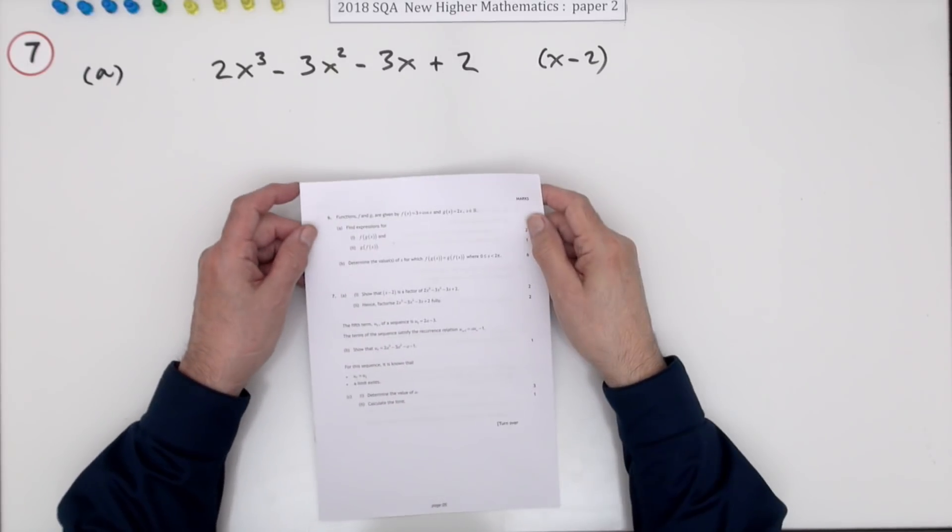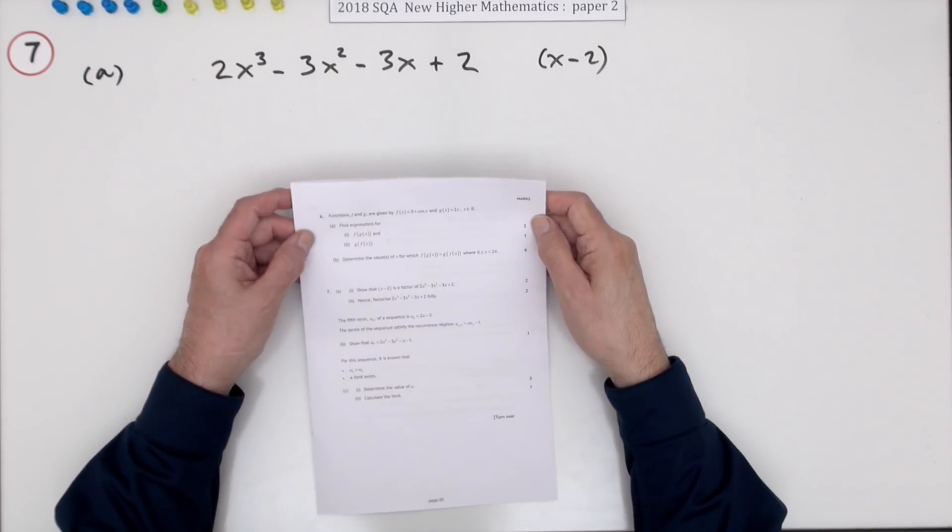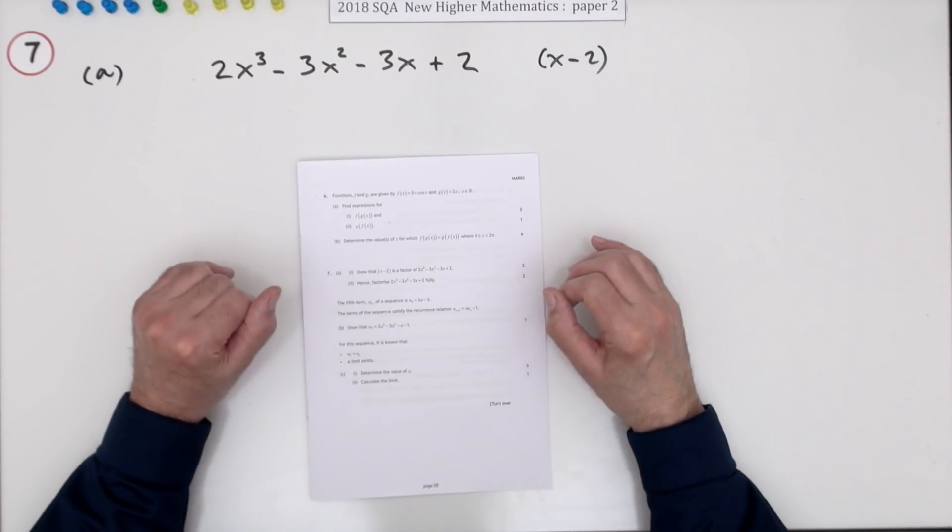Number 7 then from the 2018 SQA Higher Maths paper 2. It's a 9 mark question here, split into several parts.